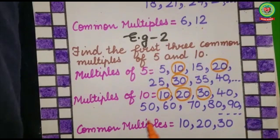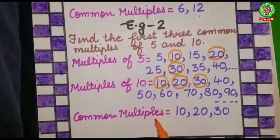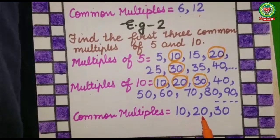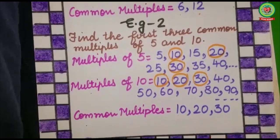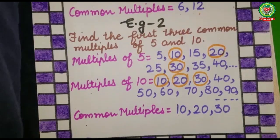I had to find the first three common multiples — I got ten, twenty, and thirty. So today we have learnt how to find the common multiples of two numbers. I hope you are now able to do the related homework sent to you in your Snap Homework. Before starting the homework, please go through the YouTube links already sent to you in your Snap Homework. Have a nice day, thank you.